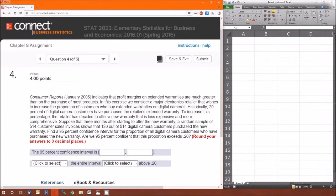Here's problem 4. Consumer reports indicates that profit margins... we're looking at profit. Historically 20% of the digital camera customers have purchased the extended warranty. So in the past it's 0.2 and they want to increase this. So we want to see eventually if we're confident that the proportion, the population proportion has increased from 0.2.